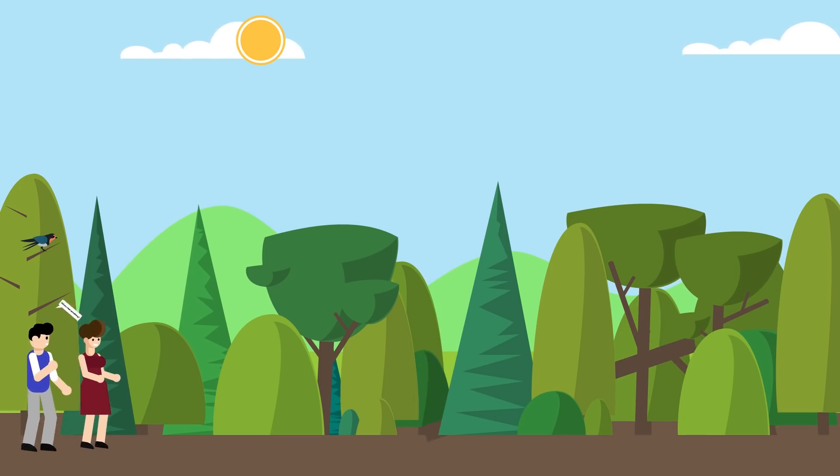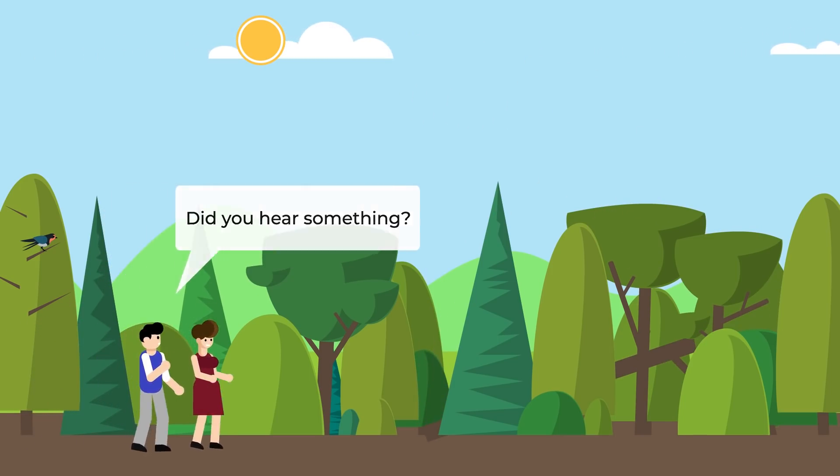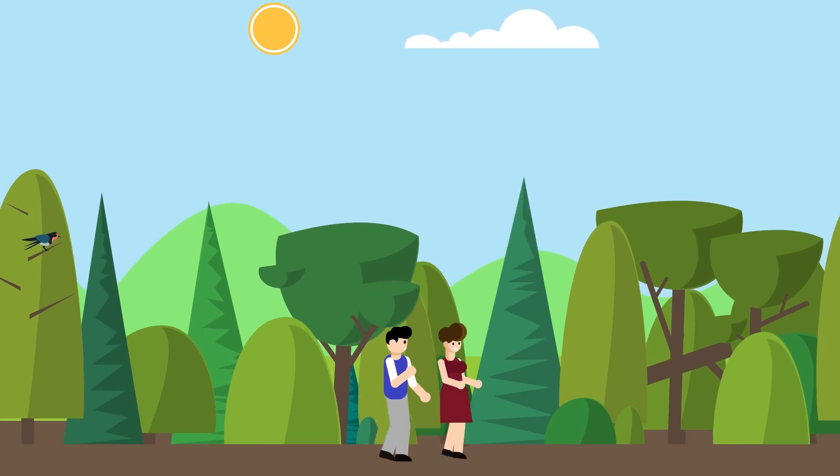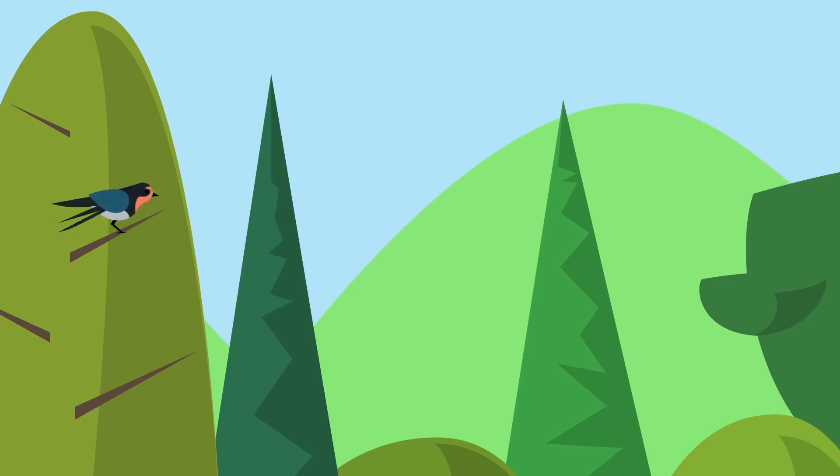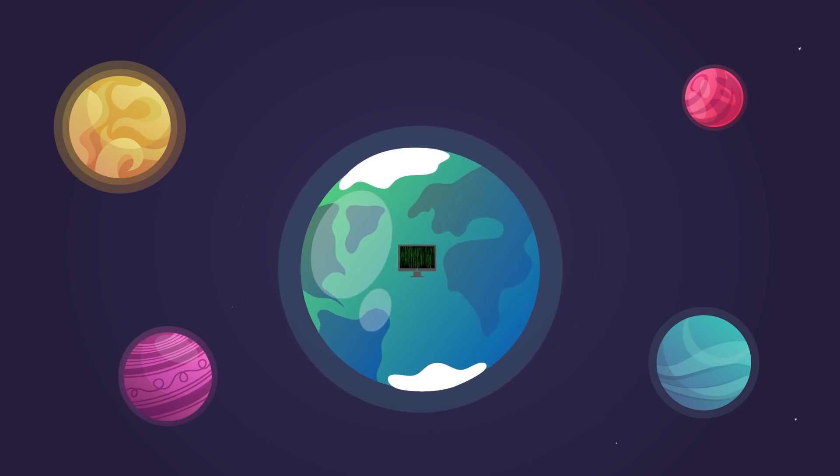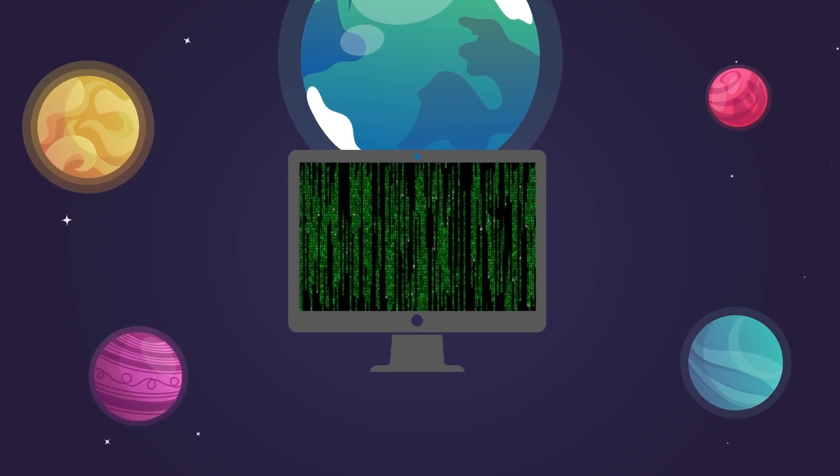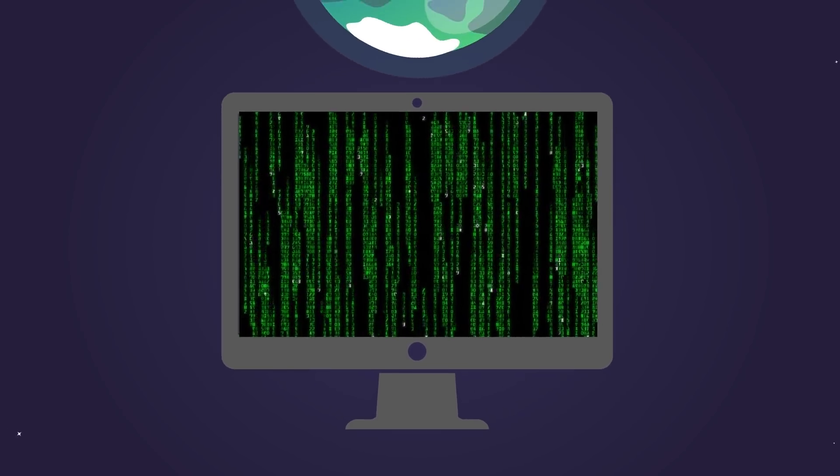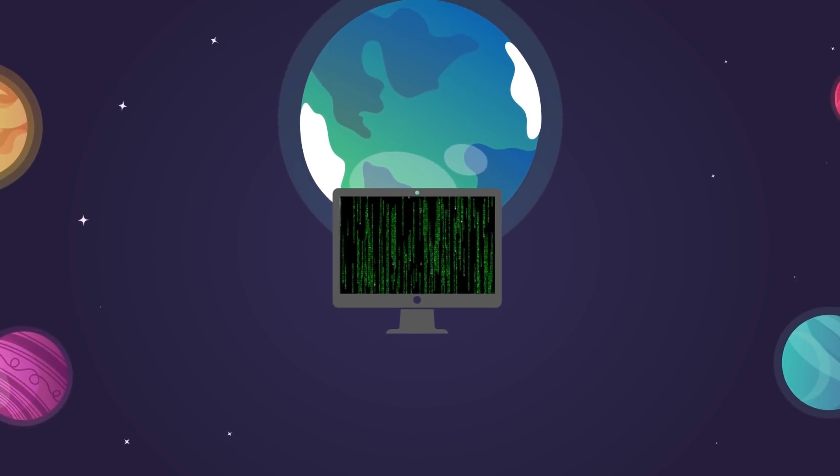In essence, it's the classic question of does a tree falling in a forest make any noise if nobody is around to hear it. Only in this case, the tree makes no noise, and doesn't even fall, because there is no need to waste computer power simulating any of that if nobody is around to hear it or see it. Therefore, you wouldn't need a computer the size of the universe to simulate the universe itself, you would only need a computer with enough computing power to simulate the very small parts of the universe being directly observed.